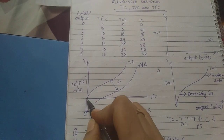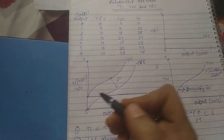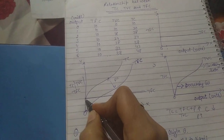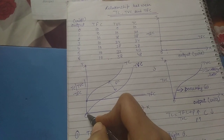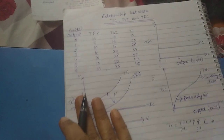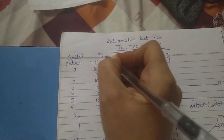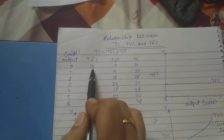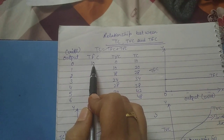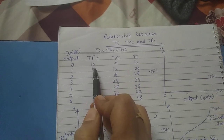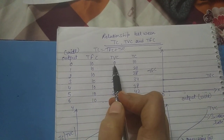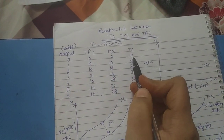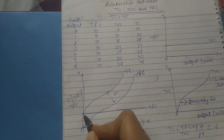The next point is that the TC curve will always start from the point of the TFC curve, because TC includes TFC and TVC, and when output is zero, some cost is still there. That is why total cost always starts from there, not from the point of origin — TVC starts from the origin, not TC. As you can see in the schedule, TC = TFC + TVC. When output is zero, TFC is 10 and TVC is zero, because the producer needs land or a building before starting production — some fixed cost is already incurred. Therefore, total cost at zero output is 10.